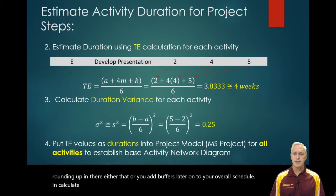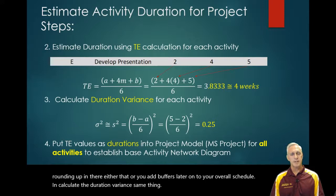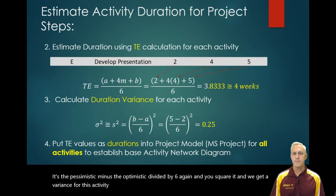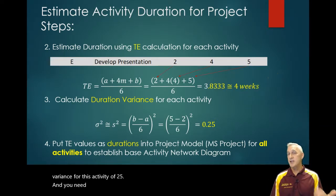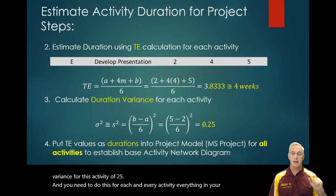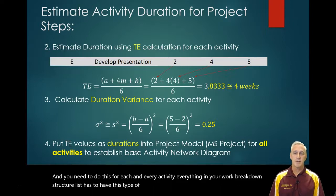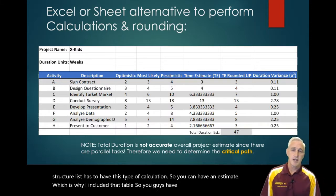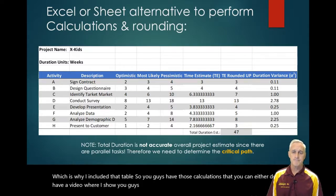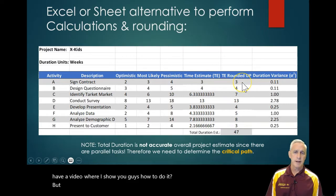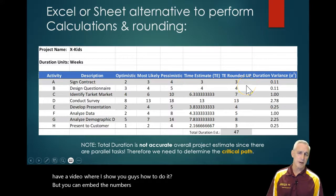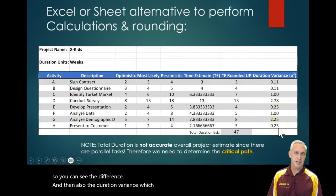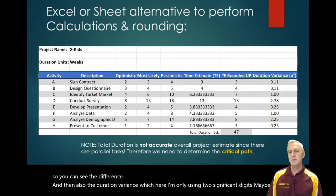You can also calculate the duration variance the same way. It's the pessimistic minus the optimistic divided by six, then you square it. For this activity we get a variance of 0.25. You need to do this for each and every activity — everything in your work breakdown structure list has to have this type of calculation. I've included that table with a roundup column so you can see the difference, and also the duration variance, which here I'm using two significant digits.